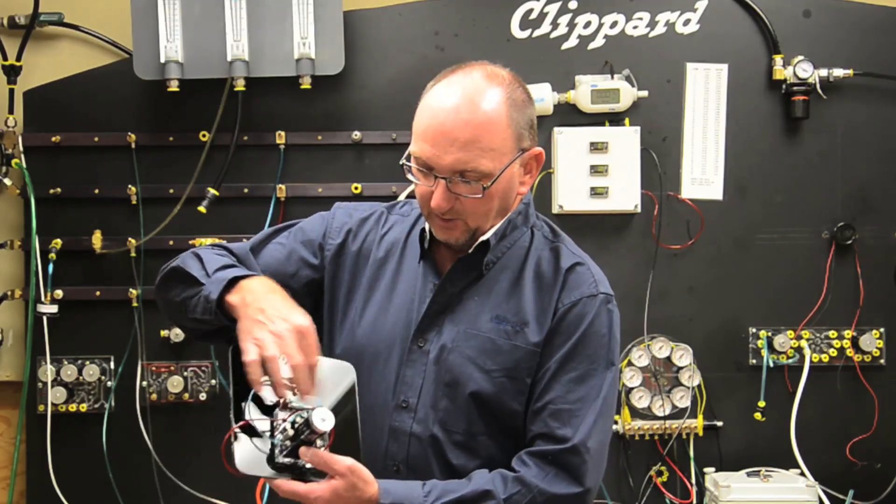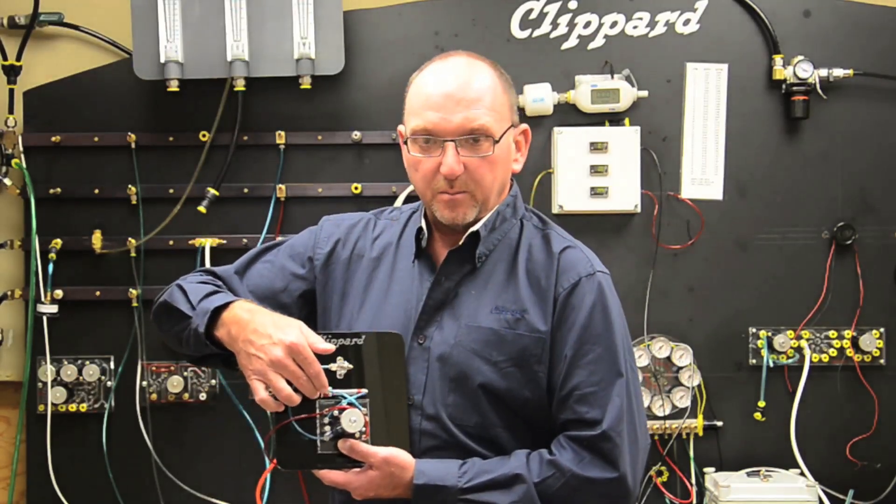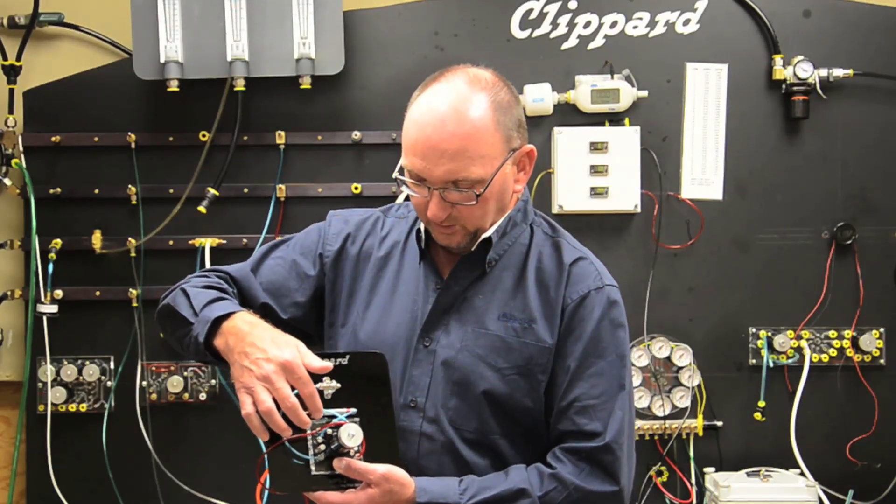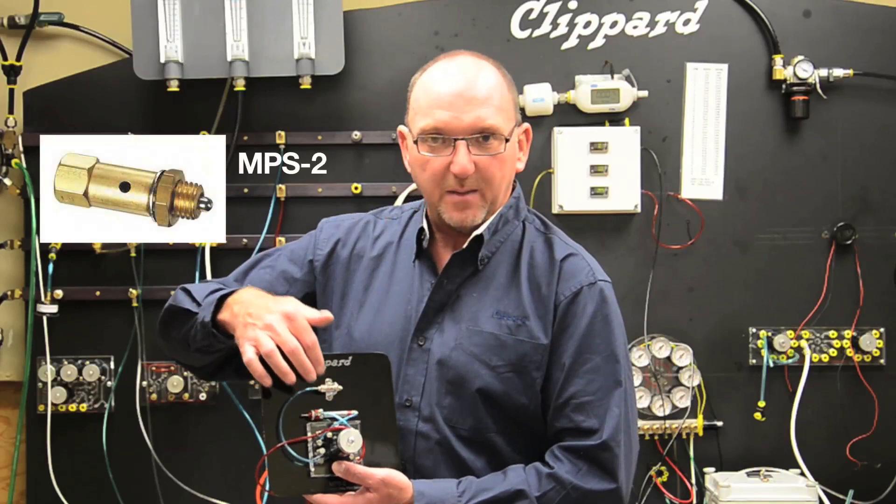Then we have our two outlets coming up to a miniature Clippard air cylinder, double acting. And then we have port four, which is our pilot port, connected to the MPS-2.